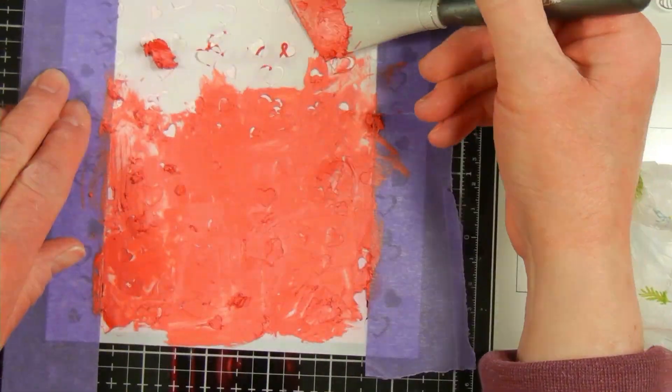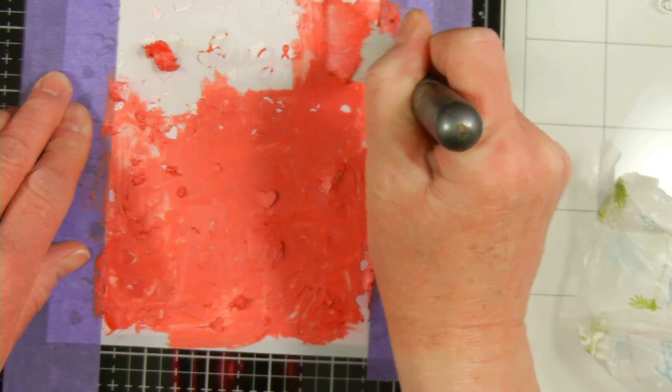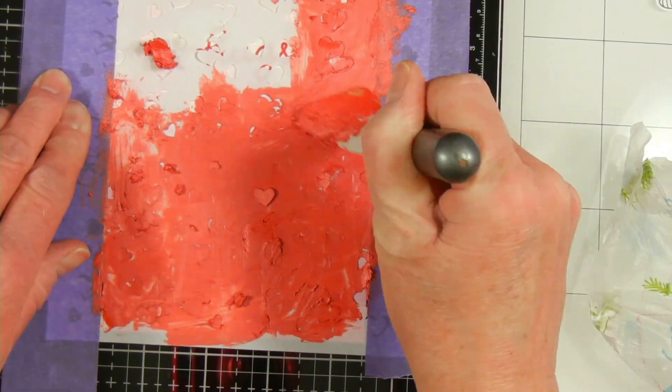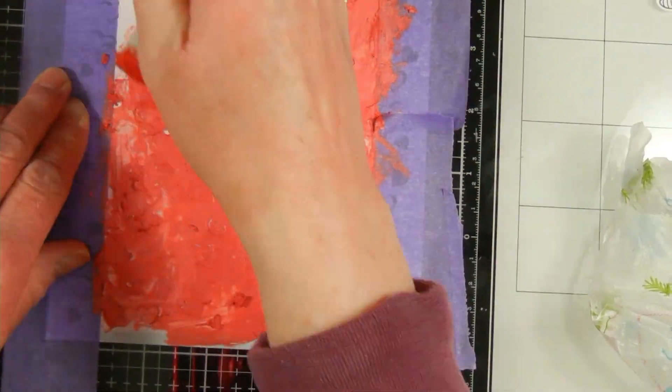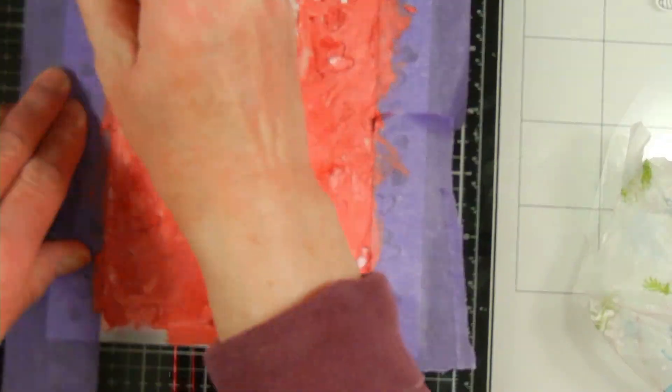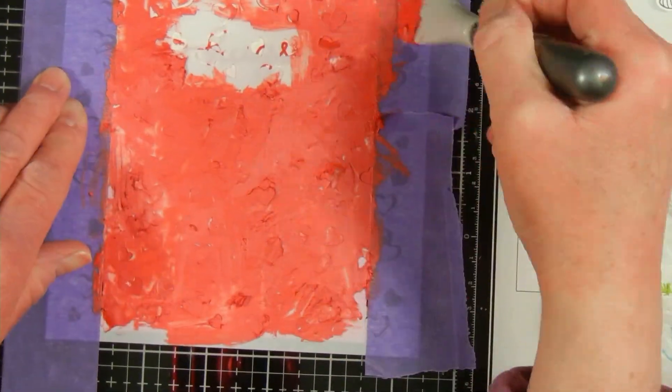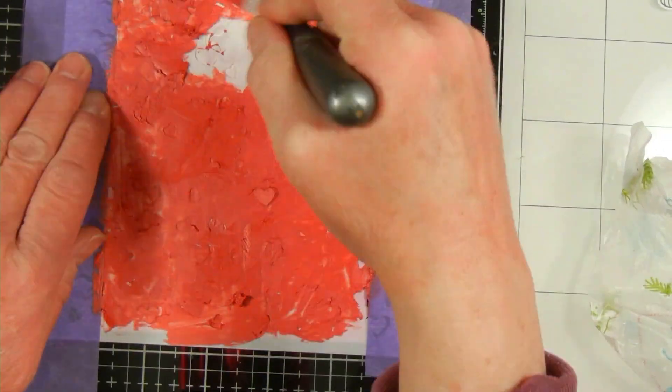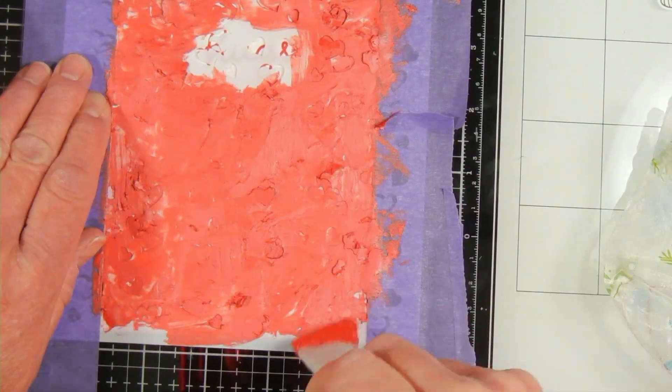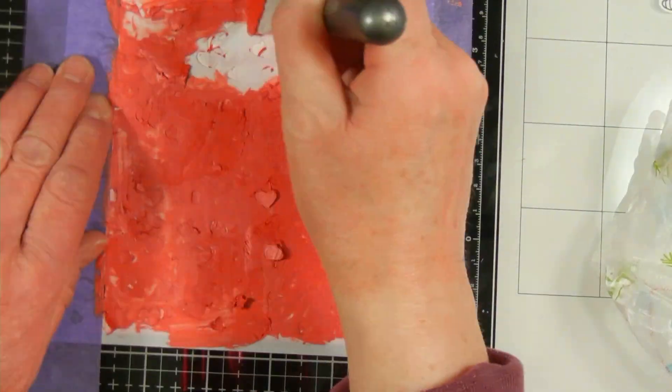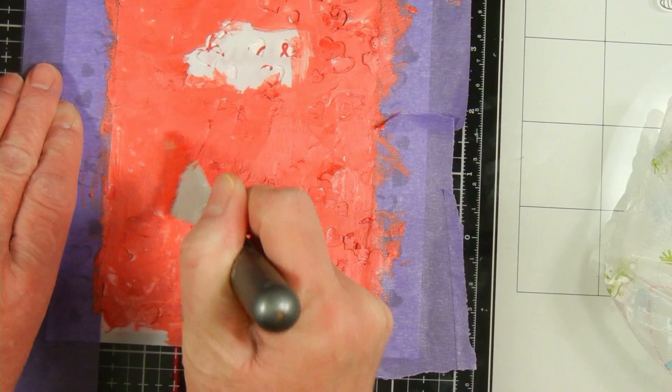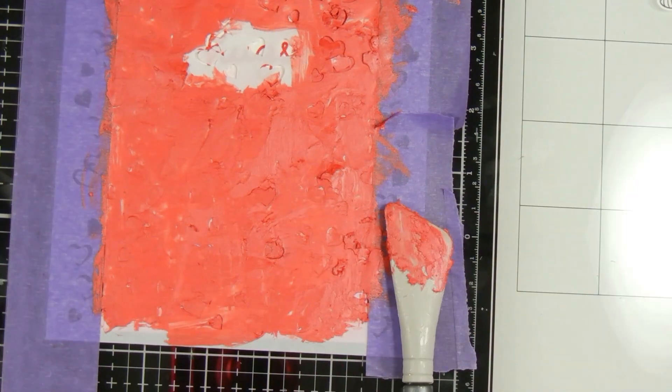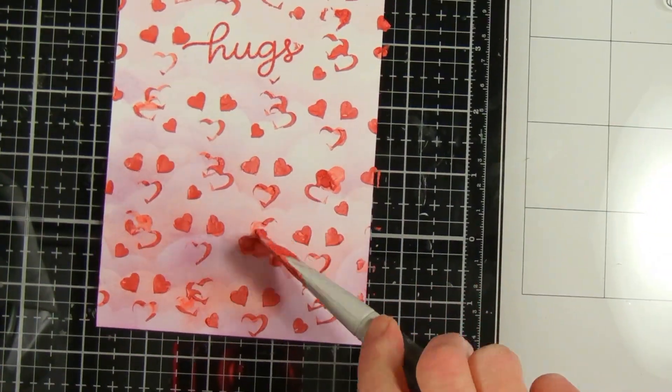So I've started using texture paste that are white or clear, then I just add color to it instead of having a bunch of different colors that you never finish up. You'll see that it's kind of crumbling and it is hard to push in there. The other thing I don't like about the mousse, especially the red, is that it is very difficult to clean off. I cleaned this as soon as I was finished but it still took me a long time trying to scrub it off the stencil.